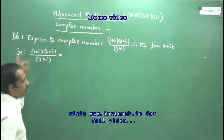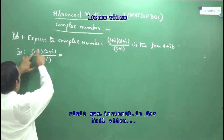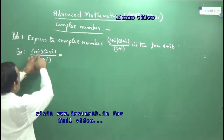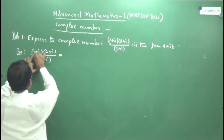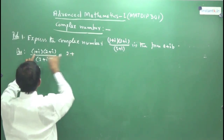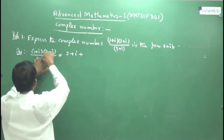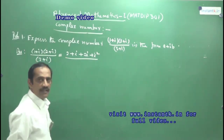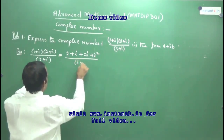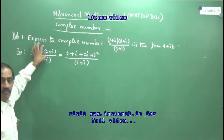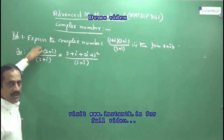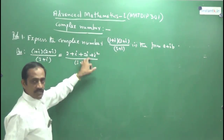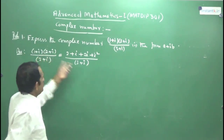To multiply the numerator: (1 + i) into (2 + i) — take 1, multiply: 1 into 2 plus 1 into i. Then take i: i into 2 plus i into i. So you get 2 + i + 2i + i². Divided by the denominator (3 + i). You have to put enough brackets because each complex number is one unit, so put a bracket around each. Then expand to get this result.